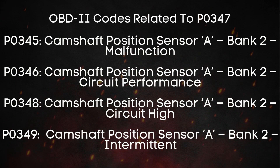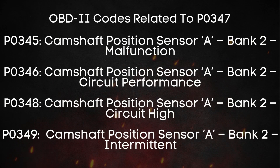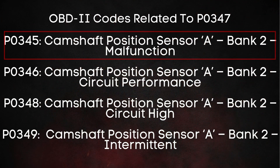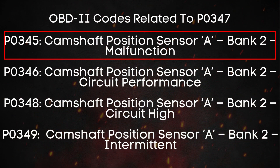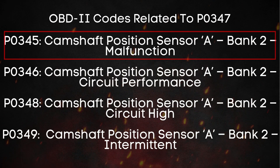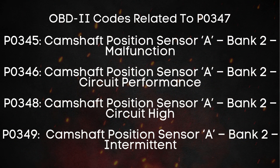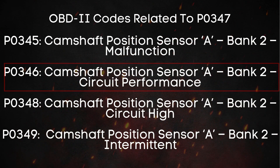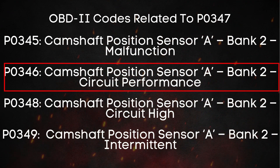Just like P0347, you might also come across a few other trouble codes related to the camshaft position sensor. One of the most common ones is P0345, which means there's a problem in the circuit that monitors the camshaft position — it could be caused by a broken wire, a poor electrical connector, or even a faulty camshaft position sensor itself. Then there's P0346, which means the intake camshaft position sensor for bank 2 has a performance problem — the signal is either out of range or not performing as expected.